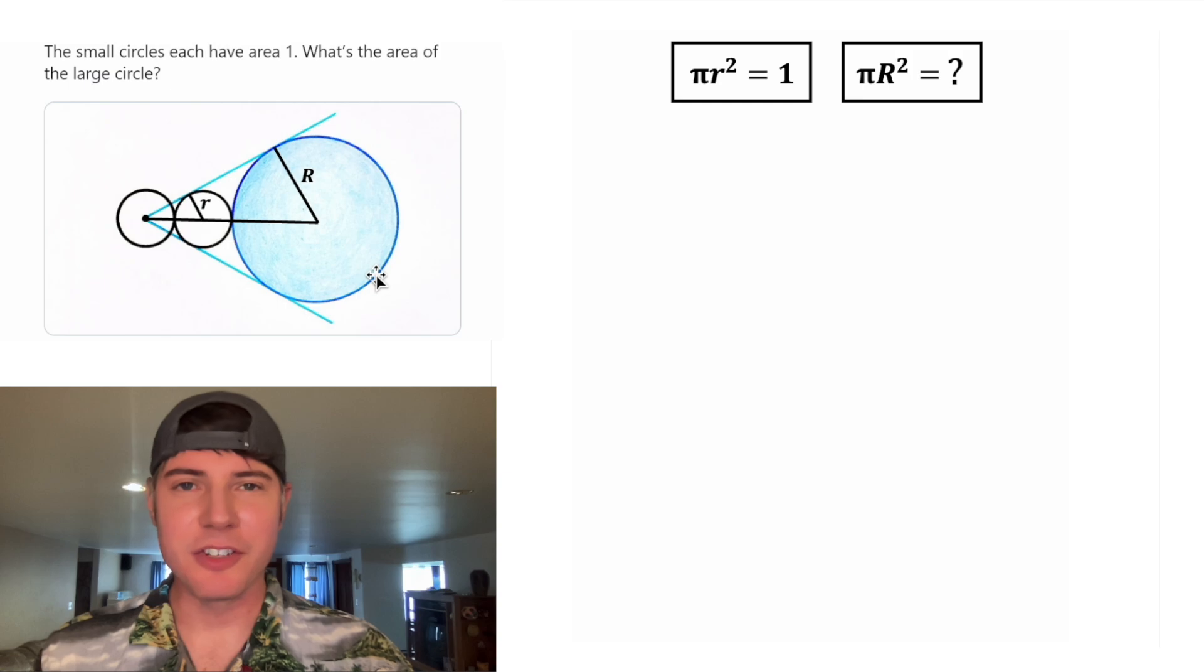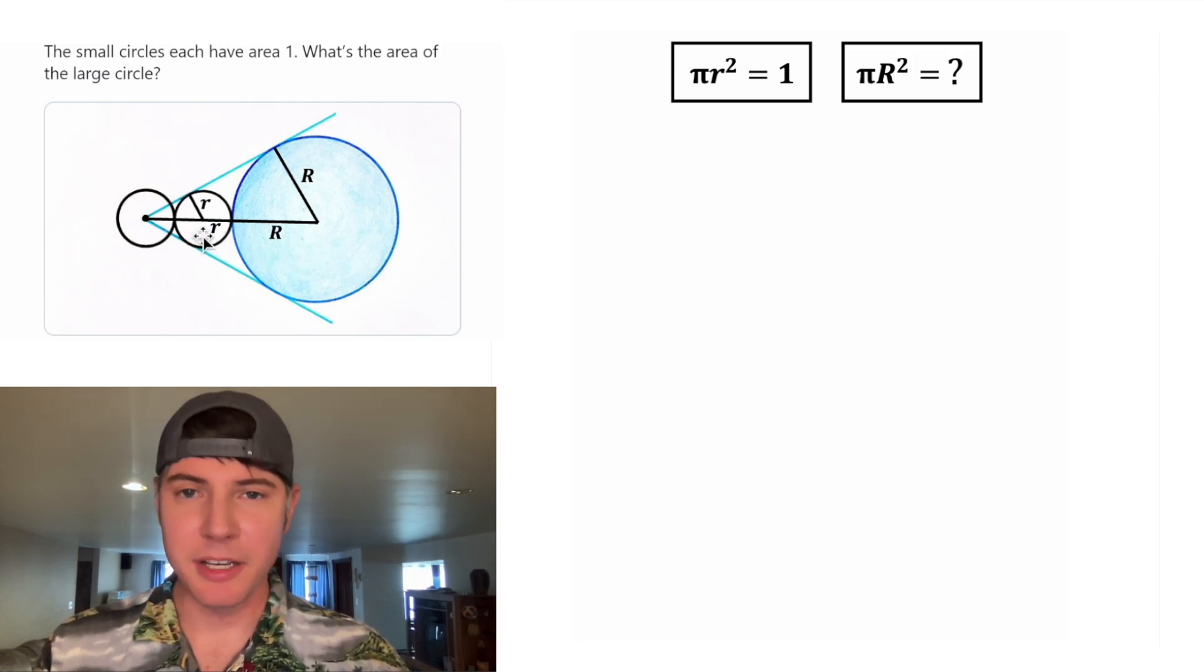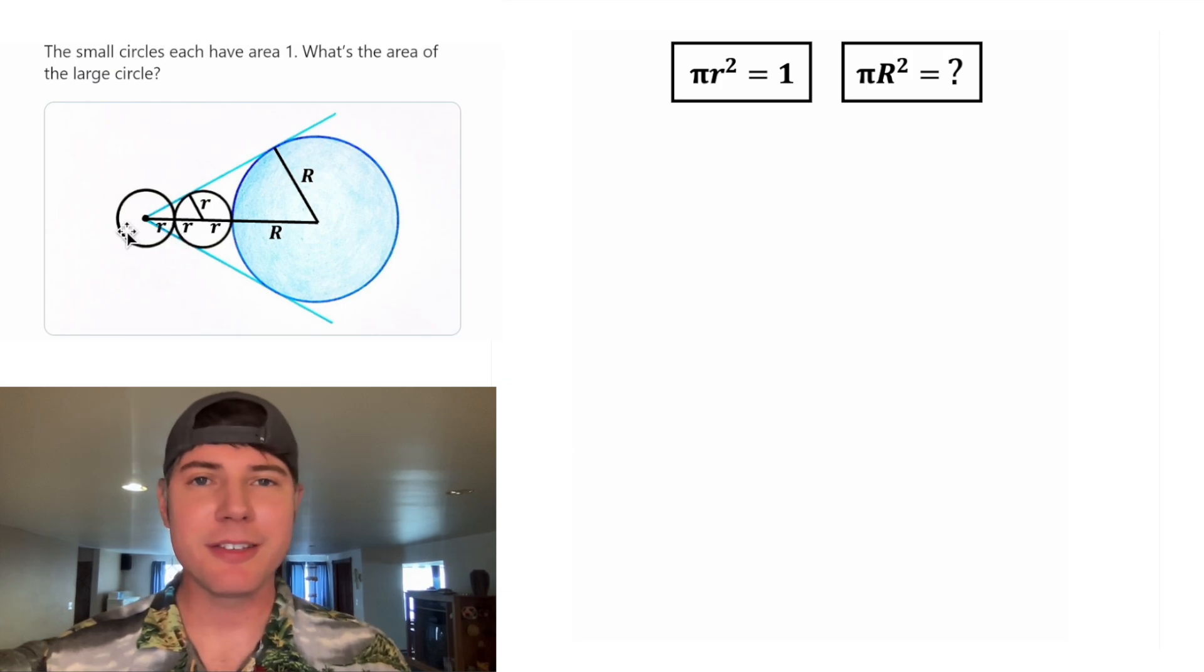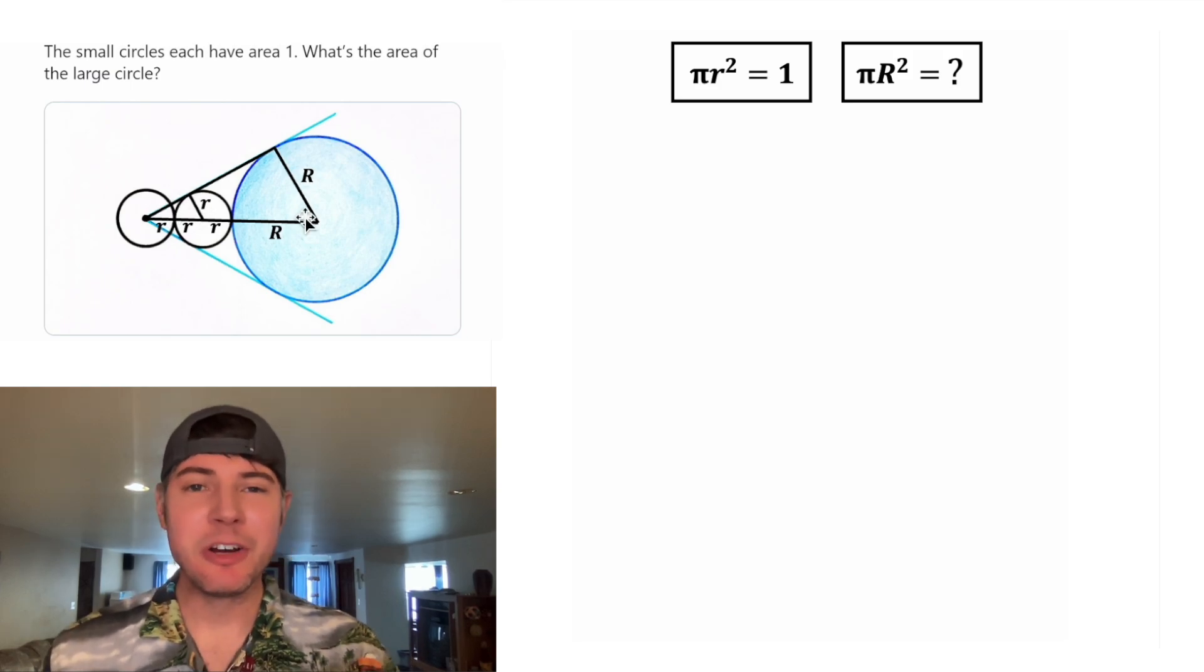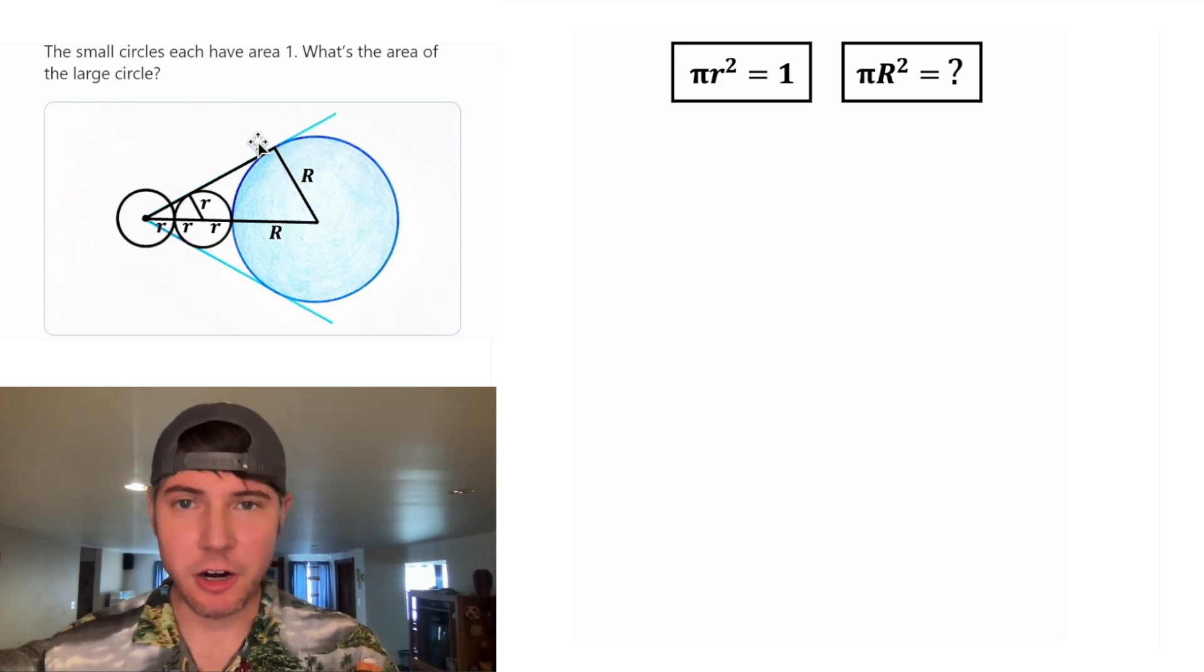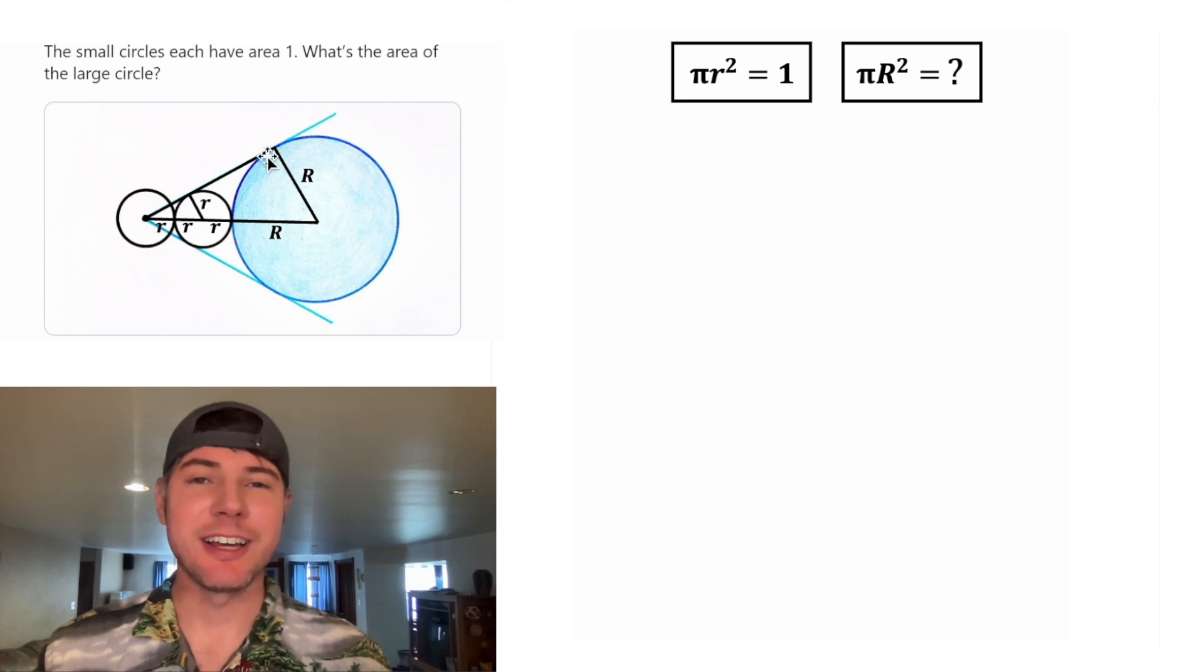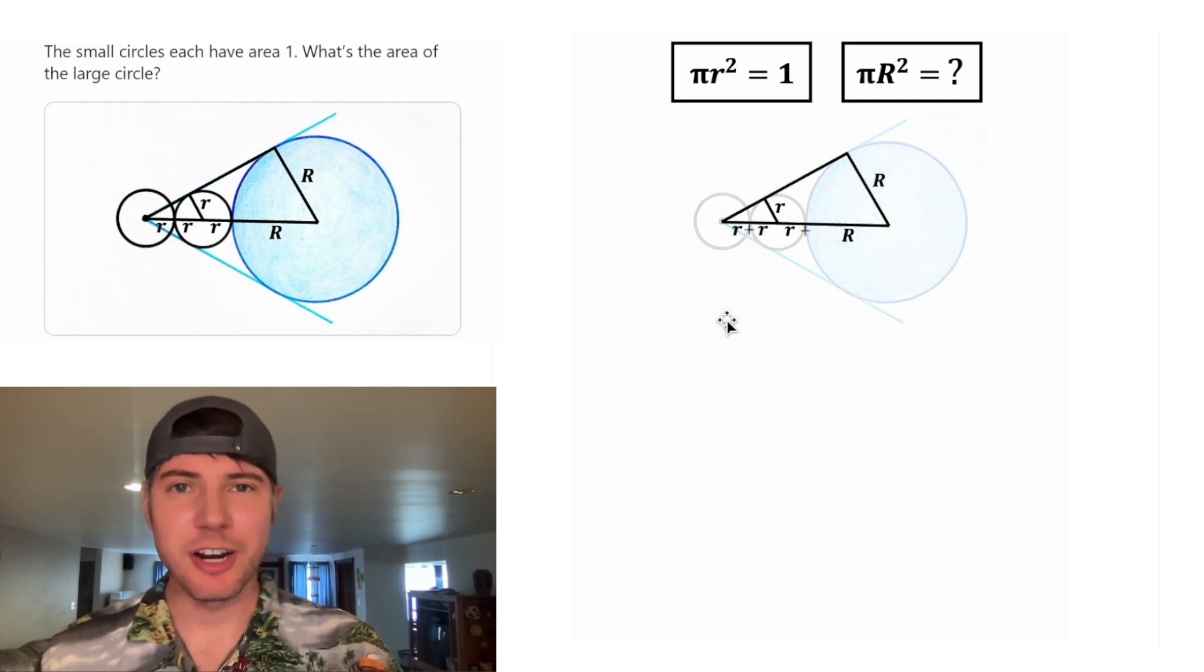Next, let's connect all the centers of the circles. It's gonna be composed of a big radius, a little radius, another little radius, and a third little radius. And if we darken this line right here, we now have two similar right triangles. And the reason we know they're right triangles is because radii are always at right angles to the tangent lines. Let's copy this down here and let's focus on the triangles.